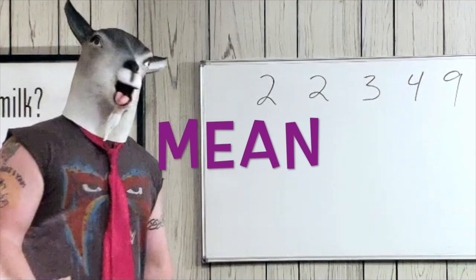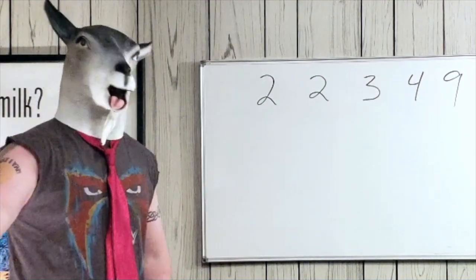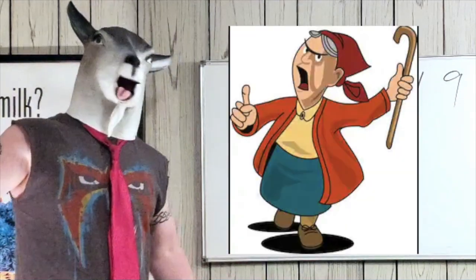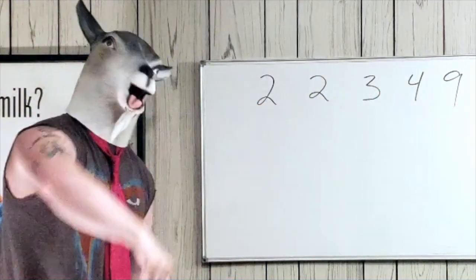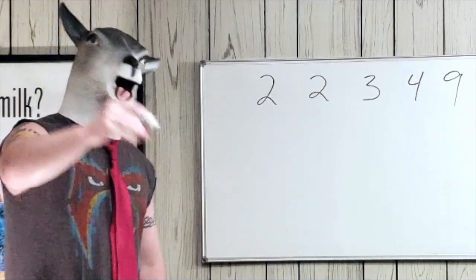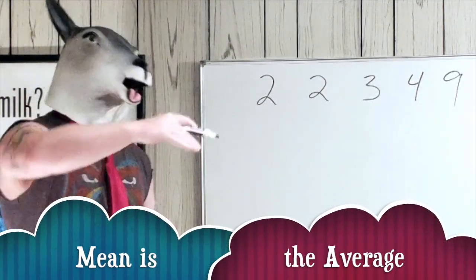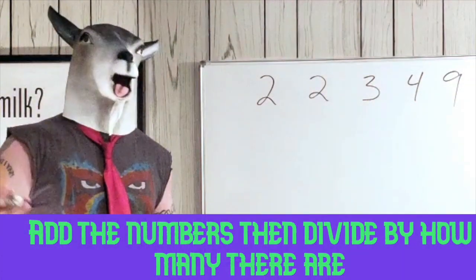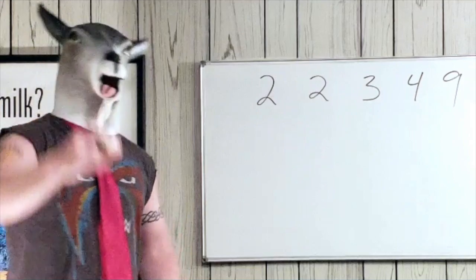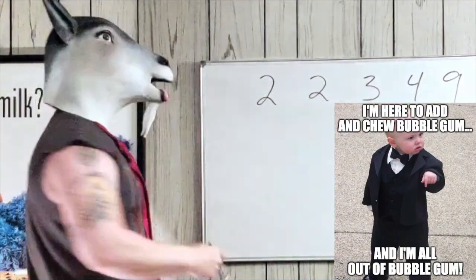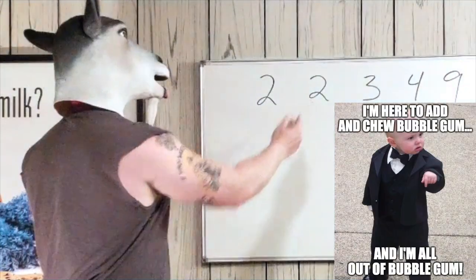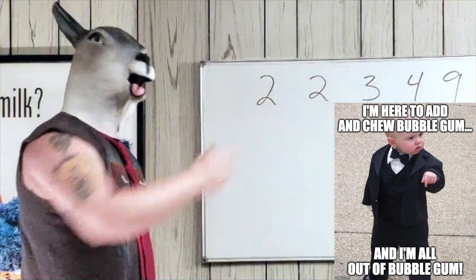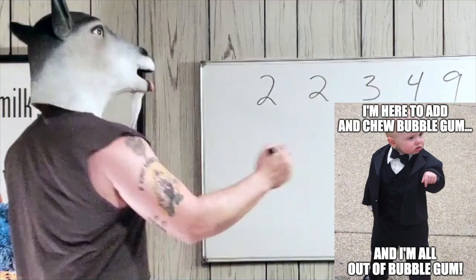Now you need to find the mean. If you get a bad grade on this test, or if you have a bad average, your mama's gonna be mean — she'll be flat out tripping, she gonna be mean. So the mean is the average. Let's learn how to do the average — we're gonna add them up and then divide by how many there are. So we got 2 plus 2 is 4, plus 3 is 7, plus 4 is 11, plus 9 is 20. So we have 20.